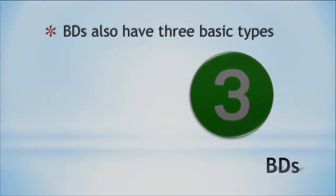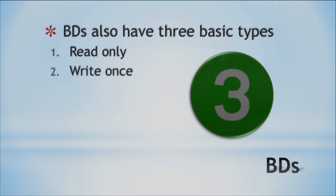Blu-ray has the same basic types as the others. You can do read-only — you can only read from it. Or you can write one time and that's it, which is somewhat permanent. And finally, rewritable — you can store to it, write over it, and change it. You can store a lot more data on Blu-ray discs than DVDs. So those are our three kinds of optical discs. That's all we have for y'all today — see y'all next time. Aloha.